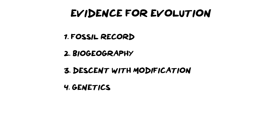Now we're going to briefly look at the evidence for evolution. For your tests and exams you need to know four pieces of evidence: fossil records, biogeography, descent with modification, and genetics. If asked to name two types, pick any two of these four. However, if asked for examples of genetic evidence specifically, you would say something like mitochondrial DNA, or DNA and RNA — giving actual examples within that category.